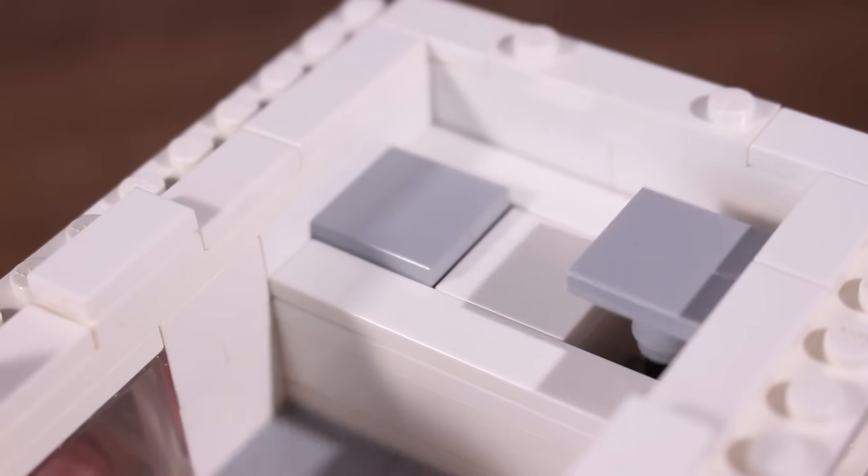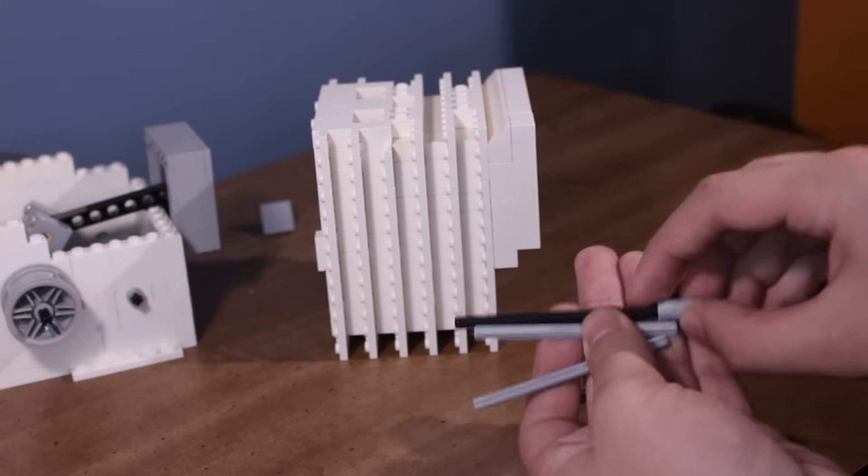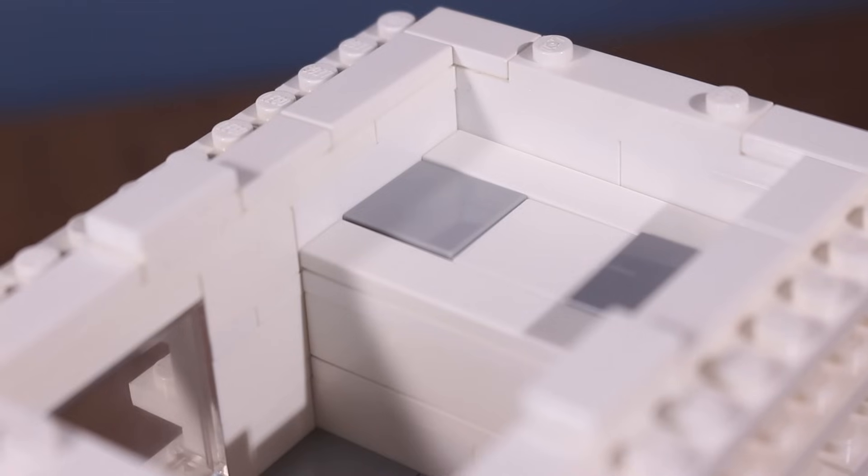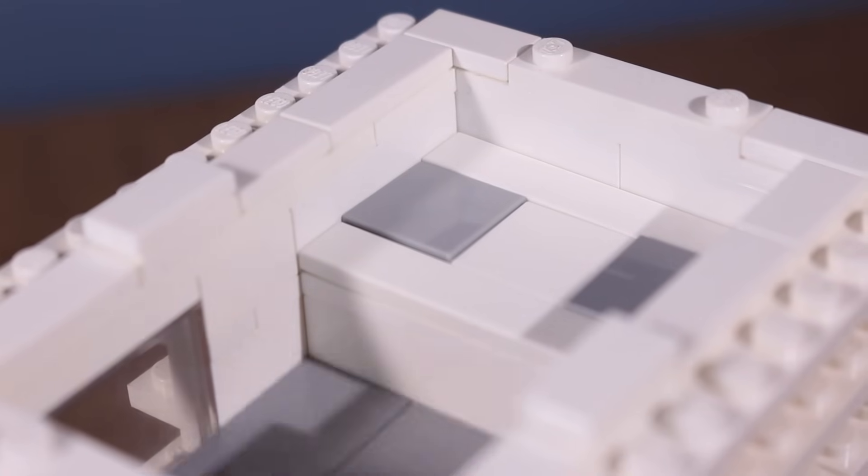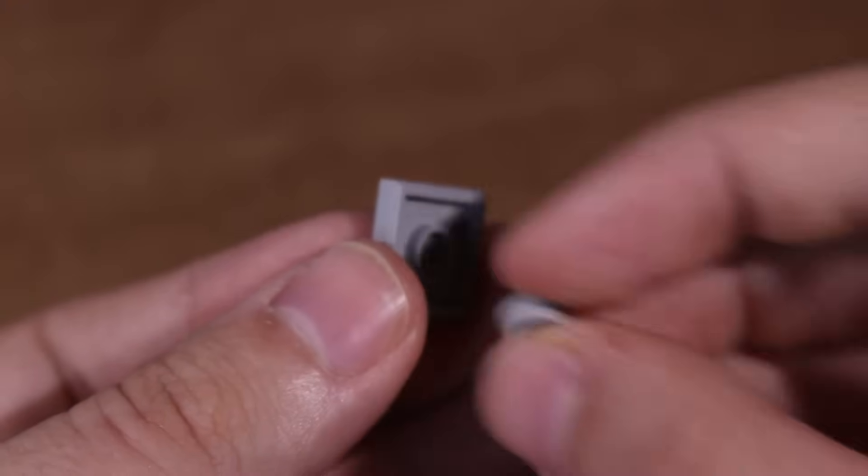But whenever I got all that done, I noticed the valves weren't sealing very well, so I switched out the valve rods for a shorter axle. But then, the valves weren't lifting high enough, so I put a 1x1 round plate on the bottom to raise them up just a little bit.